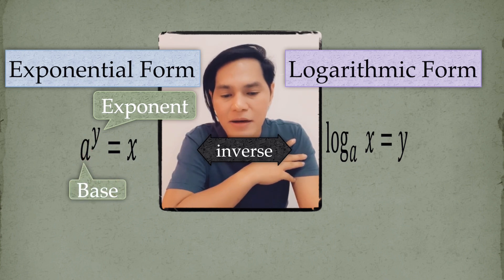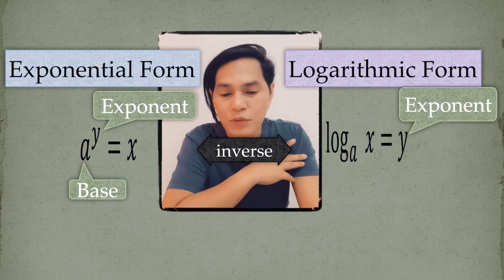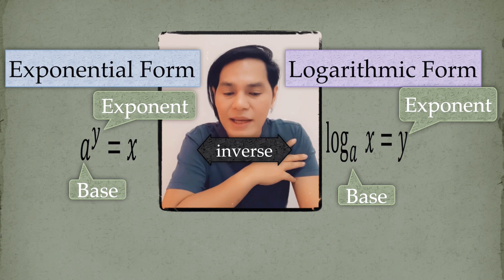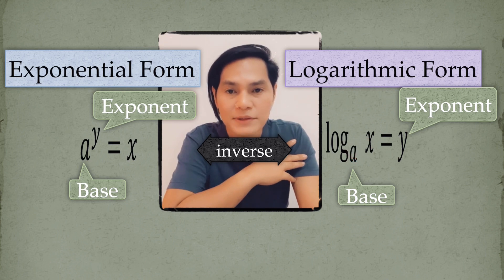And here in the logarithmic form, look at the exponent, which is Y, and the base, which is A. Y here is now the equivalent of the logarithm. So, look at here. A is still the base. You read this one as the log of X to the base A is equal to Y.